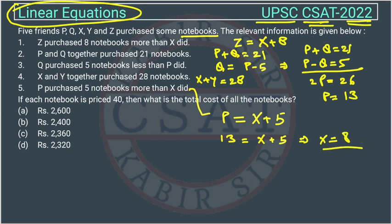So now he is asking, if each notebook is priced 40, then what is the total cost of all the notebooks? So what we need? We need P plus Q plus X plus Y plus Z. So this is the total notebooks. P plus Q is 21.